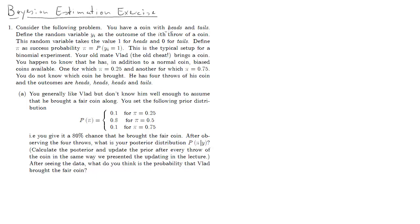So in this clip we're going to go through the solution of the Bayesian estimation exercise. We have a coin, it comes up with heads or tails. yi shall be a random variable with the outcome of the ith throw. We'll call it success here.